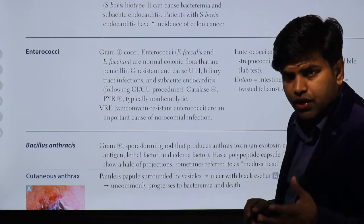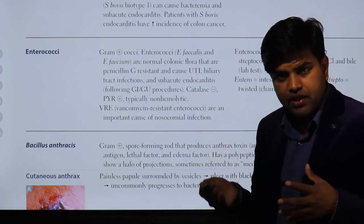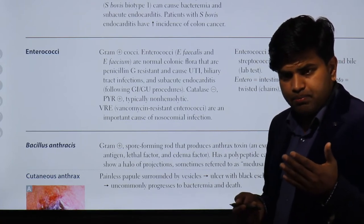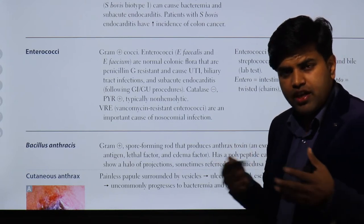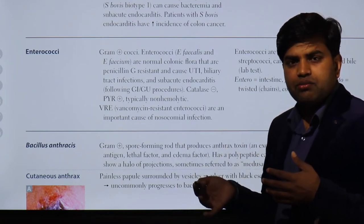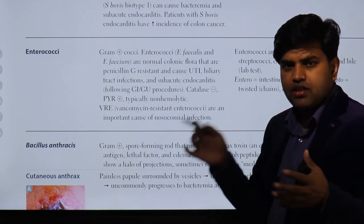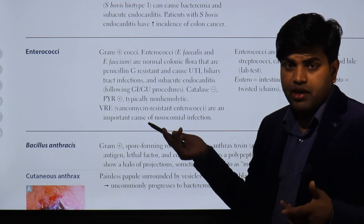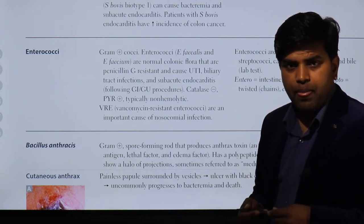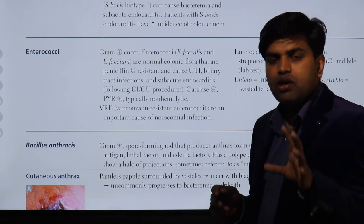Many enterococci have developed resistance to vancomycin. For gram-positive infections, the treatment ladder goes from penicillin, then oxacillin, cloxacillin, dicloxacillin, flucloxacillin, ampicillin, amoxiclav, piperacillin-tazobactam, cephalosporins, then carbapenems like meropenem. For resistant organisms like VRE or MRSA, many of these become inactive. Vancomycin is used for MRSA, but when vancomycin is also resistant in enterococci, only a few options remain, such as linezolid. VRE is a common and important emerging bug causing nosocomial infections.